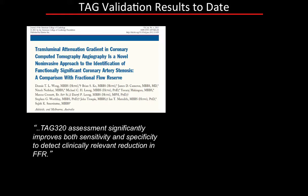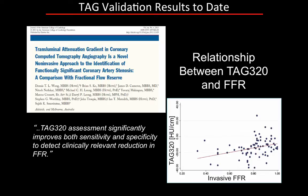A number of groups have looked into validating the use of TAG with respect to detecting functionally significant stenosis, typically described by the fractional flow reserve. One study from the Melbourne group shows that TAG computed from 320-detector CT significantly improved both sensitivity and specificity to detect a clinically relevant reduction in fractional flow reserve. However, if you take a closer look at the scatter plot, the correlation between invasive FFR and the transluminal attenuation gradient, while present, is not exactly strong—something I will come back to later.